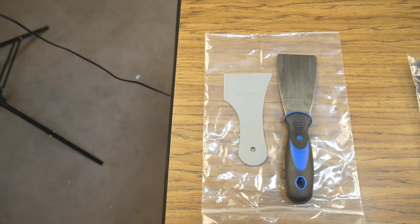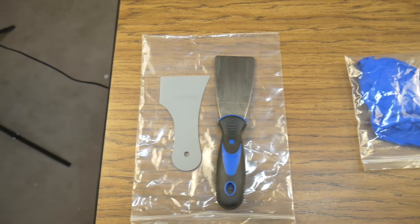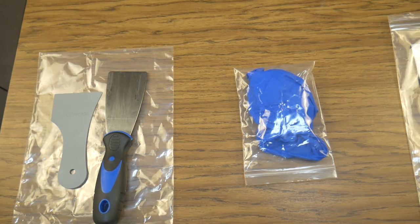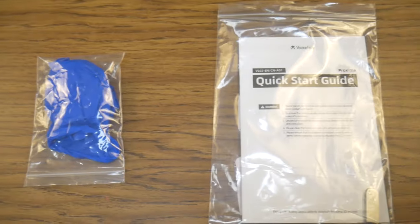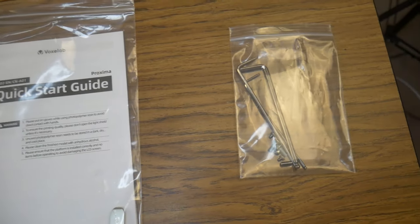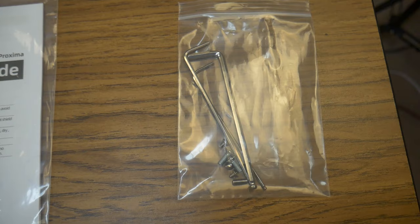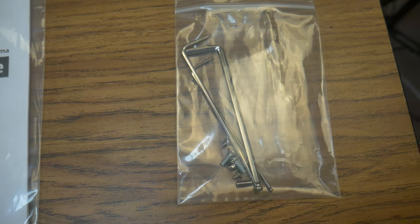Provided with the printer are two spatulas, one plastic and one steel, a couple of rubber gloves, a quick start guide with a USB thumb drive, and a bag that contained some small wrenches and extra screws.